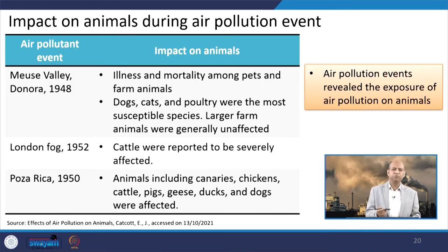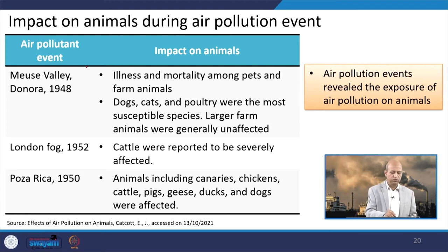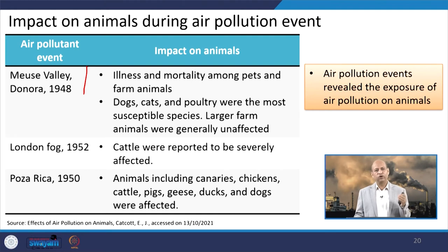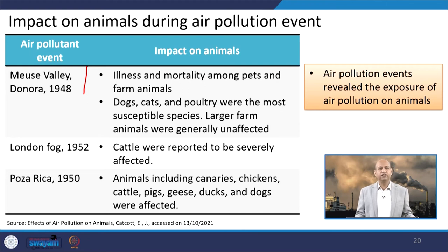There are examples where animals got exposed to air pollutants with negative impacts observed. The Mews Valley incident in 1948 caused illness and mortality among pets and farm animals. Dogs, cats, and poultry were the most susceptible species, while the larger farm animals were generally unaffected because of their sturdy nature. In the London smog, cattle were reported to be severely affected. The Pozo Rica 1950 incident affected animals including canaries, chickens, cattle, pigs, geese, ducks, and dogs — across all these populations.